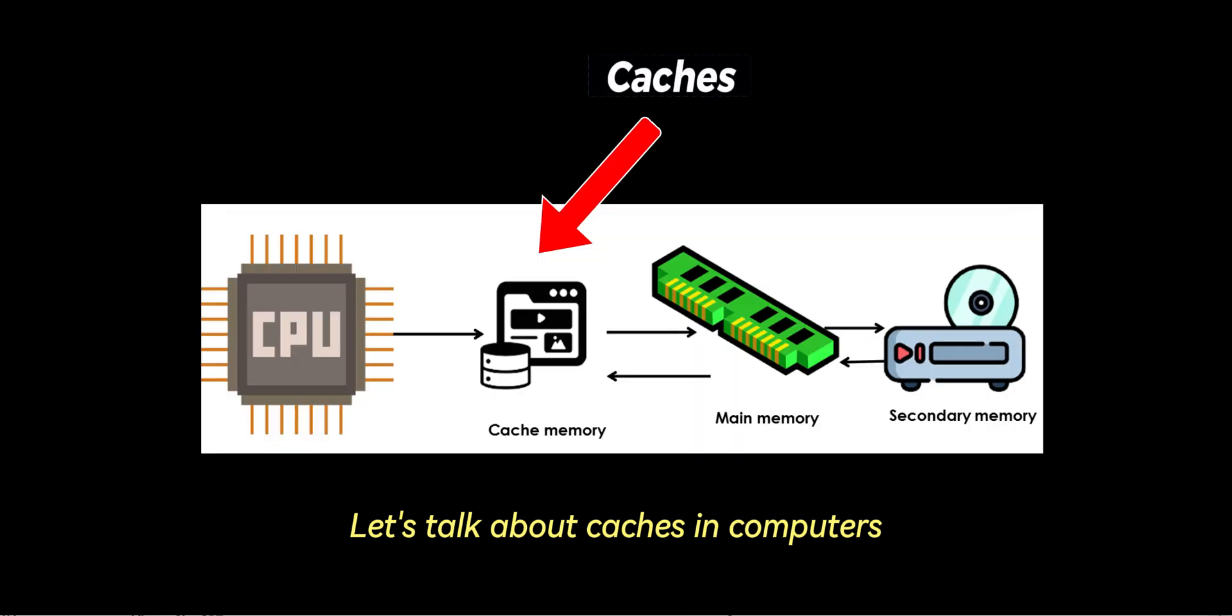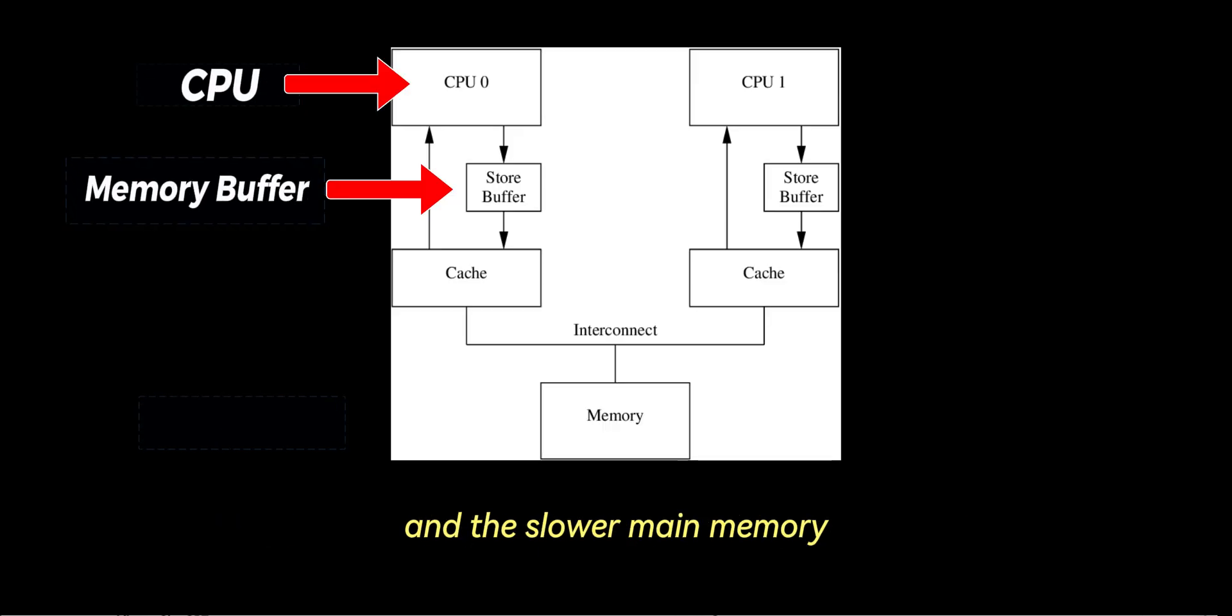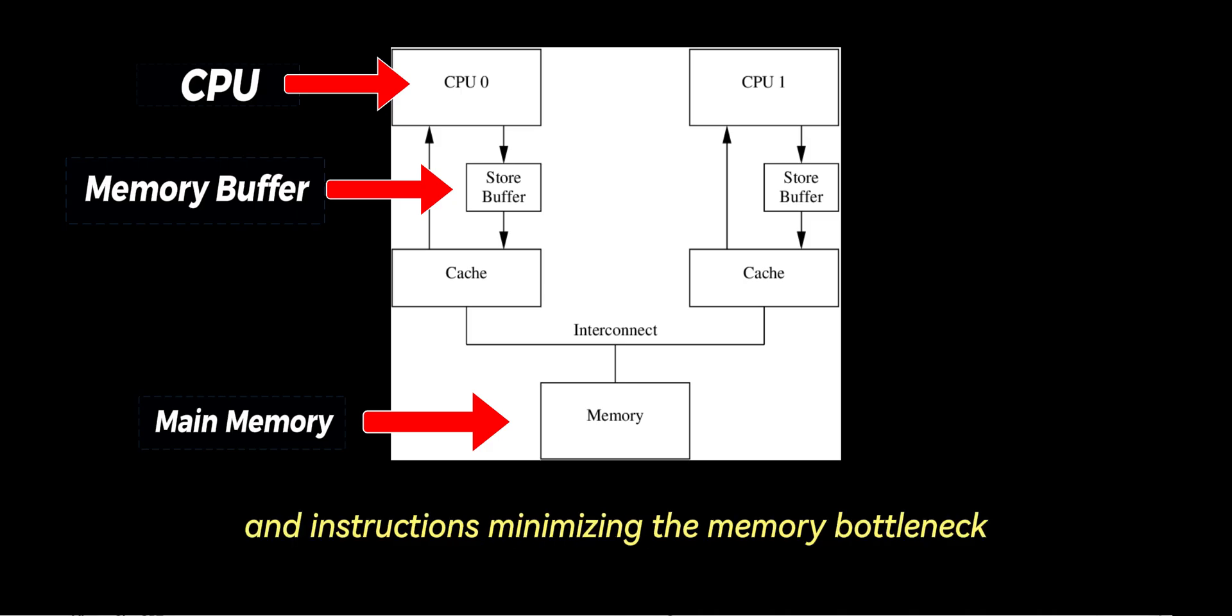Let's talk about caches in computers. Caches are an essential component of modern computer architecture, acting as a high-speed memory buffer between the CPU and the slower main memory, or RAM. Their primary purpose is to reduce the time it takes for the CPU to access frequently used data and instructions, minimizing the memory bottleneck that can limit overall system performance.